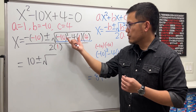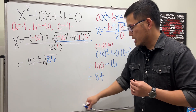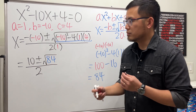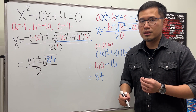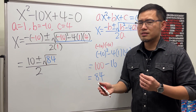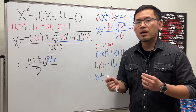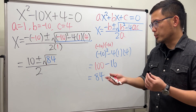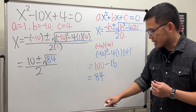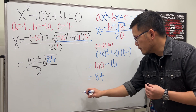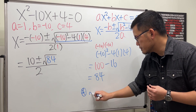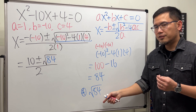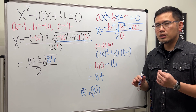84 is the number for the inside of the square root, and on the bottom 2 times 1 is just 2. But this does not look like the answer we got last time from completing the square. The reason is that square root of 84 can be reduced — it can be broken down. Let me show you how. When we have square root of 84, we have to think about what times what will give us 84, and one of those numbers should be a perfect square.